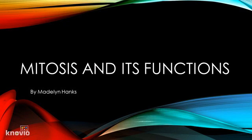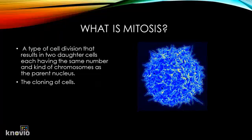My name is Madeline Hanks, and today I am going to be discussing mitosis and its functions. What is mitosis? The definition of mitosis is a type of cell division that results in two daughter cells, each having the same number and kind of chromosomes as the parent nucleus. I thought this was kind of confusing, so I broke it down to make it simpler: mitosis is the cloning of cells. Our cells can clone themselves — in fact, they are doing it right now. This process is called mitosis.